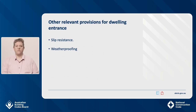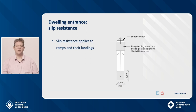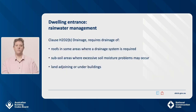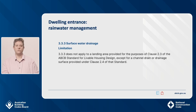There are other NCC provisions relevant to dwelling entrances, including slip resistance and weatherproofing. If the dwelling entrance landing is shared with a ramp, it will need to meet the slip resistance and dimension requirements of NCC Volume 2 H5D2, as detailed in the Housing Provisions Clauses 11.2.3, 11.2.4 and 11.2.5. In NCC Volume 2, H2P1 rainwater management includes performance requirements that cover surface water. The DTS provisions are found in NCC Volume 2 Clause H2D2B drainage, which includes requirements for drainage of roofs, subsoil areas where excessive soil moisture problems may occur, and land adjoining or under buildings. Clause H2D2 calls up Clause 3.3.3 of the ABCB Housing Provision Standard and contains an important limitation statement that excludes a landing area for the purpose of Clause 2.3 of the standard.